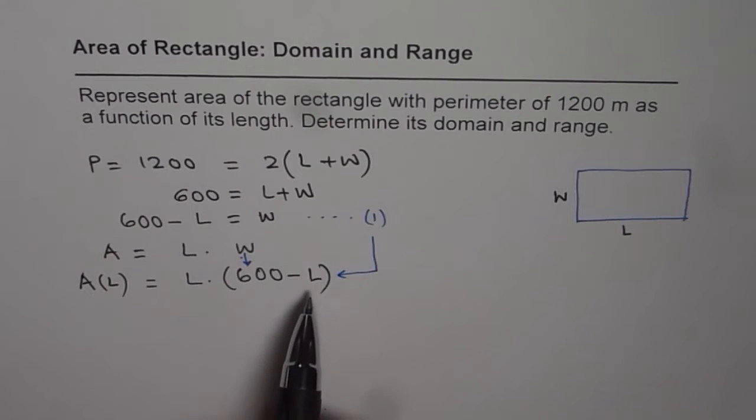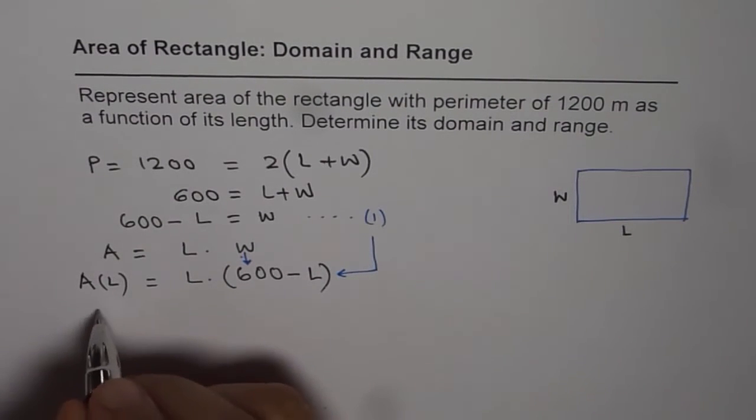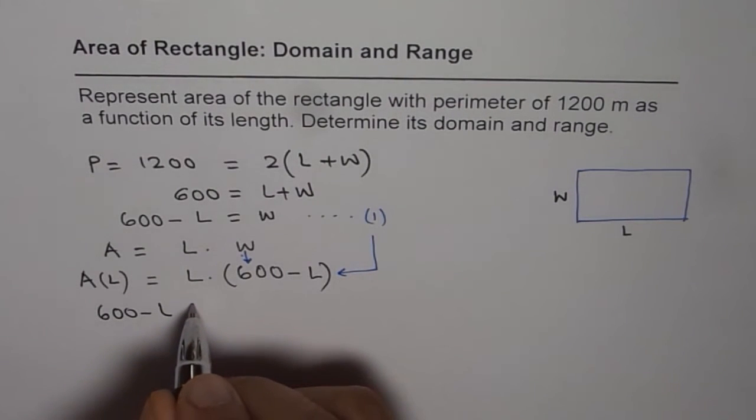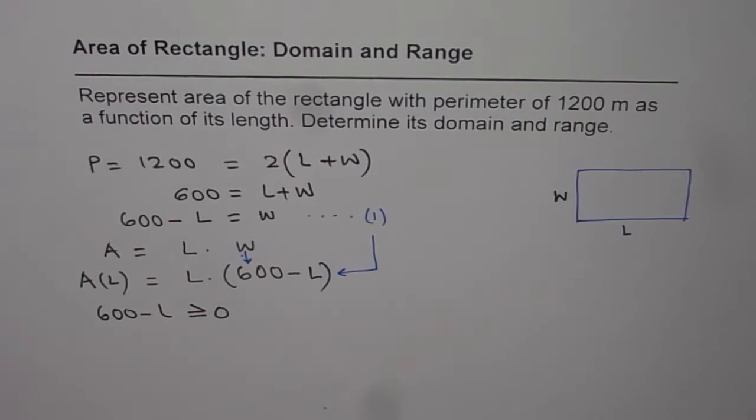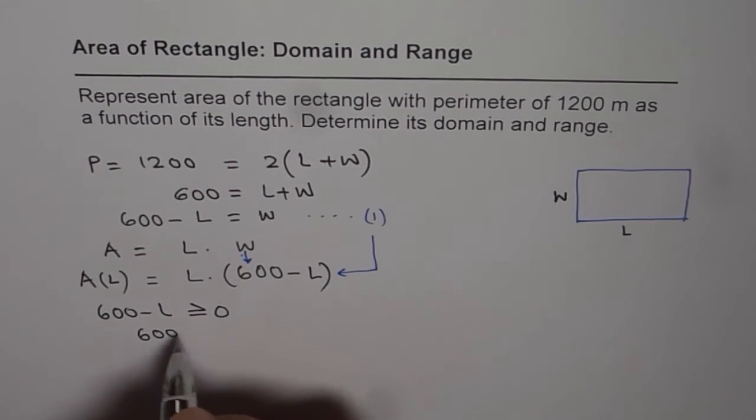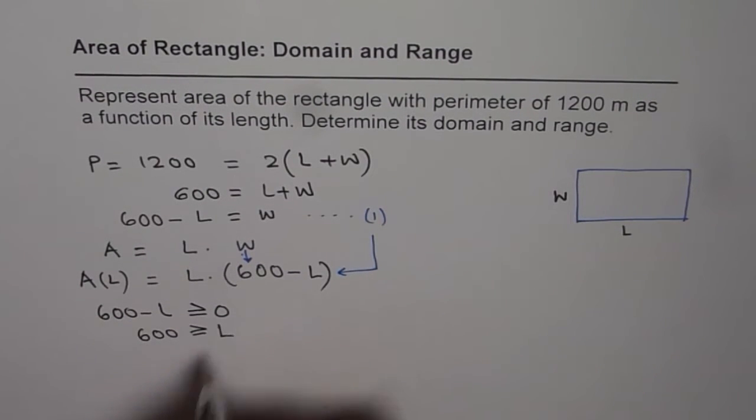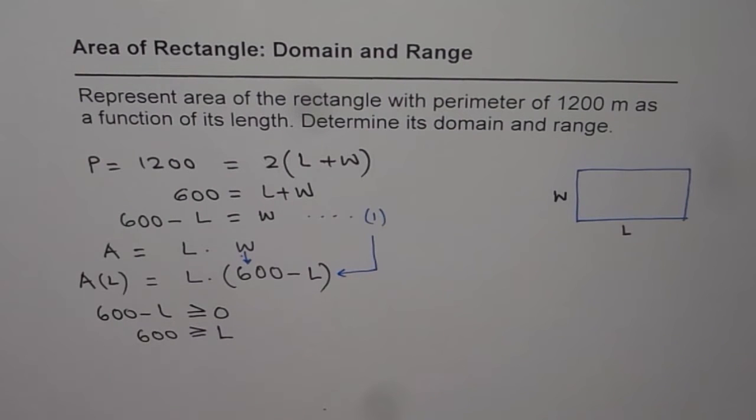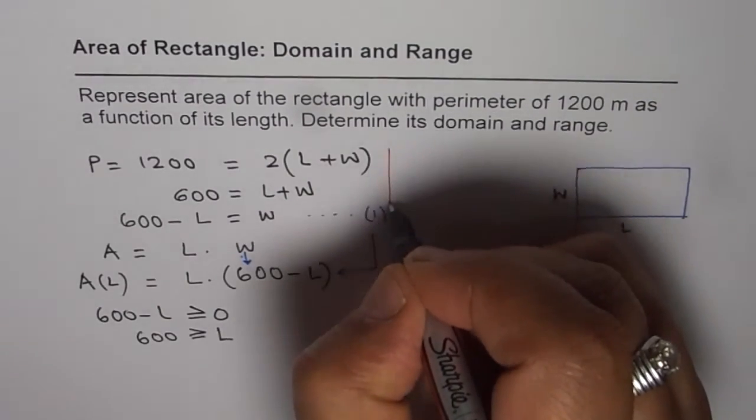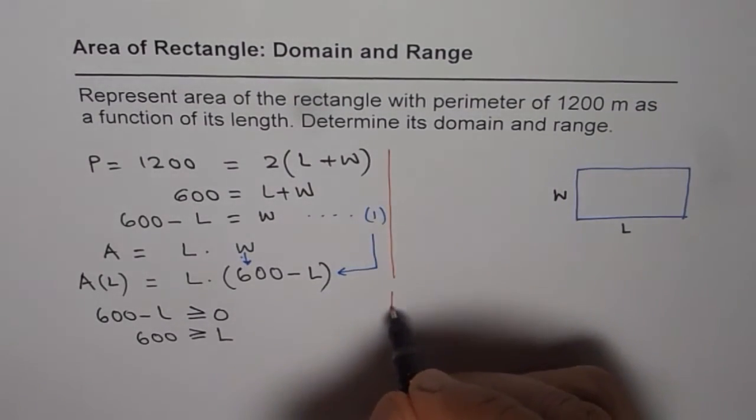Here you see L is your independent variable. So for domain, we have to see what values can L take. So 600 minus L should be always greater than or equal to 0. That is the restriction. It cannot be negative. Solving this, we get 600 is greater than or equal to length. That means length is less than or equal to 600. That gives us our domain.